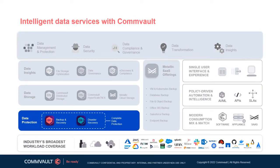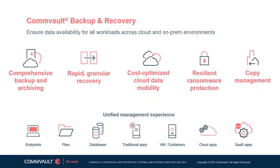Data Protection with Backup and Recovery, along with Disaster Recovery, delivers complete data protection to all workloads in traditional backups, snapshots, replication and more. Disaster Recovery is not directly focused in this module but will be discussed in the DR module. Commvault Backup and Recovery ensures data availability for all workloads across cloud and on-prem environments, delivering simple comprehensive backup and archiving from a single extensible platform. This includes trusted recovery with rapid granular recovery of data and applications, scalable cost-optimized cloud data mobility via automatic scaling and tiering, resilient ransomware protection with end-to-end data security and encryption, and flexible data reuse with copy data management.